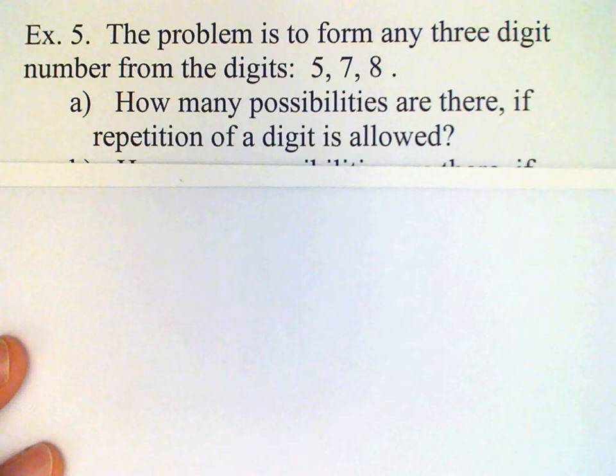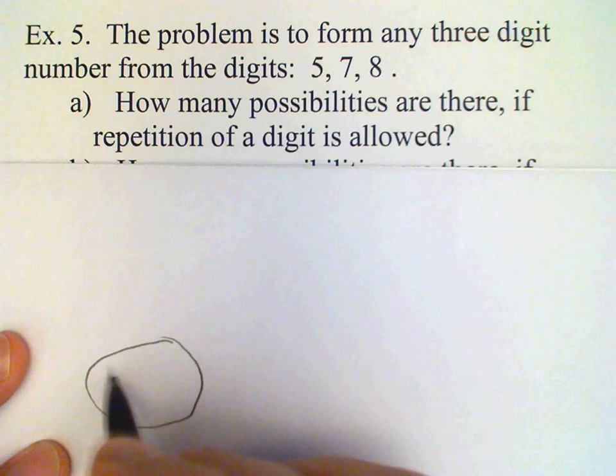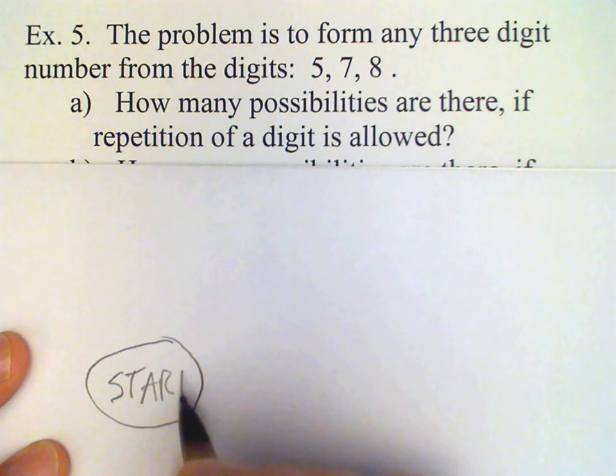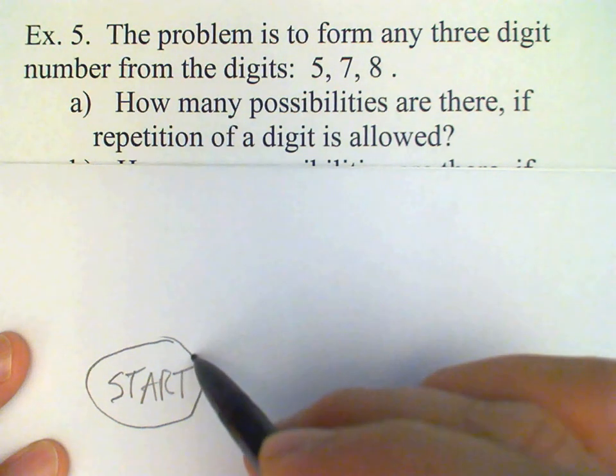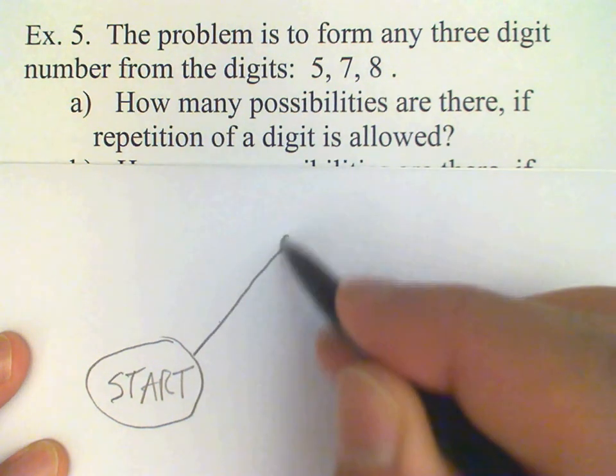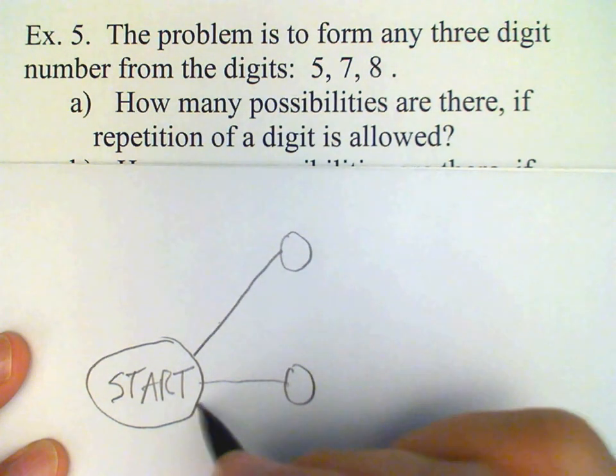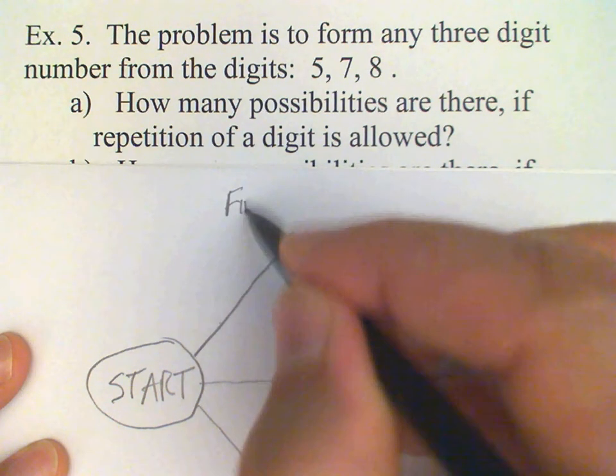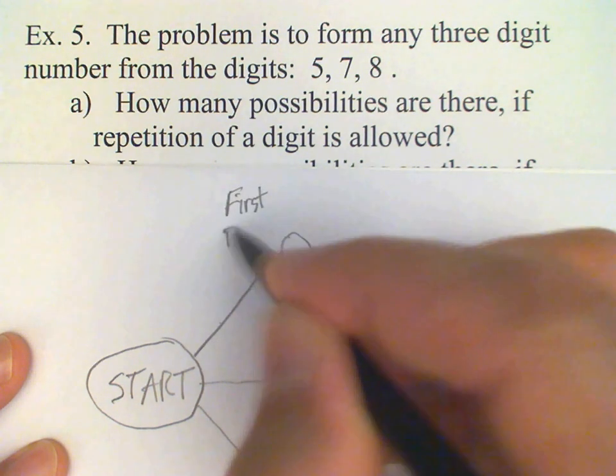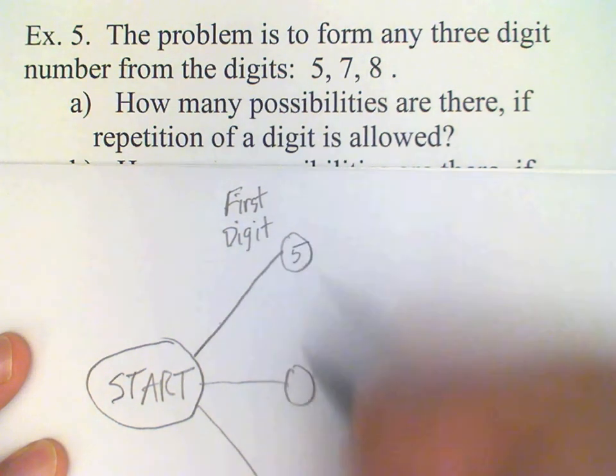Okay, so we could think of this in terms of a tree diagram. Start. So, first digit, three possibilities, right? It could be a 5, it could be a 7, it could be an 8.